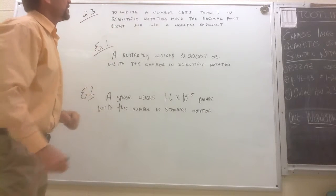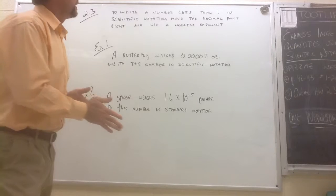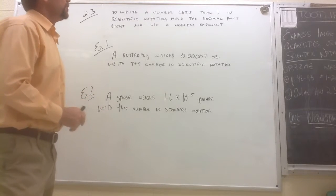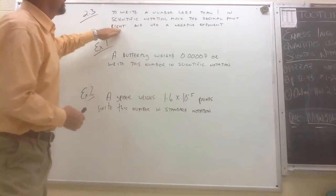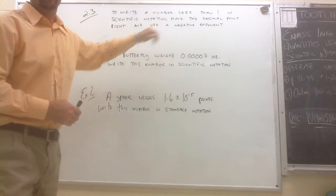And here's the rule for you. To write a number less than one in scientific notation, you move the decimal point right and use a negative exponent.